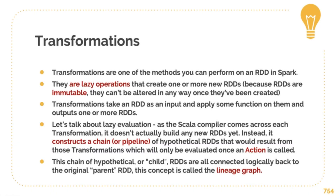So what exactly are transformations? Transformations are one of the most important methods you can perform on RDDs in Spark. They are lazy operations that create one or more RDD objects, because RDDs are immutable and can't be altered once created. So transformations take an RDD as an input, apply some function on it, and output one or more RDDs. In lazy computation, as the Scala compiler comes across each transformation, it doesn't actually build any new RDDs yet, but constructs a chain or pipeline of hypothetical RDDs that would result from those transformations, which will only be evaluated once an action is called. Those child RDDs are all connected logically back to the original parent RDD — this is called the Lineage Graph.